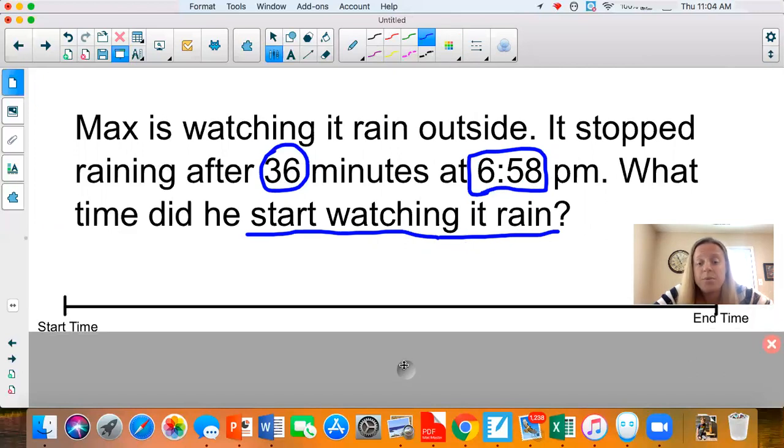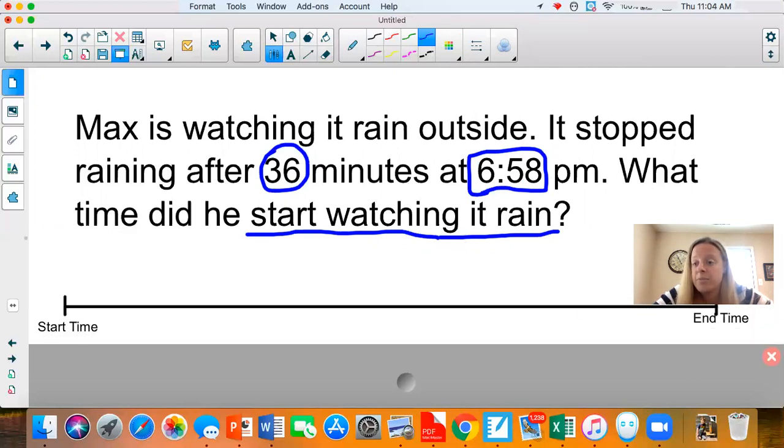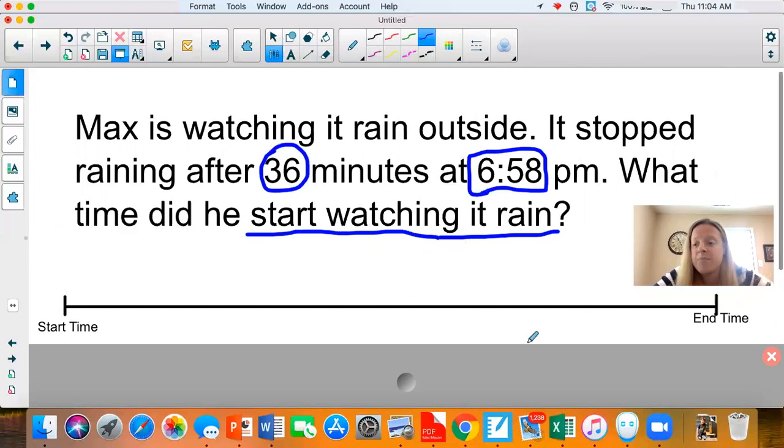So again, I'm going to use an open number line here. I've already labeled my end points. I have my start time, my end time. But do I know my start time this time? I do not know my start time. So that's my question. My end time, if I go back in my problem, it says that it stopped after 36 minutes at 6:58 PM. So over here for my end time, I'm going to write 6:58 PM.